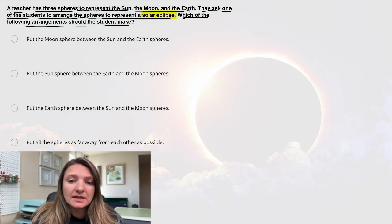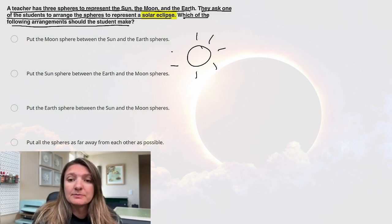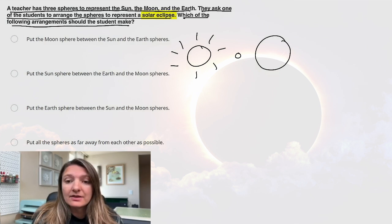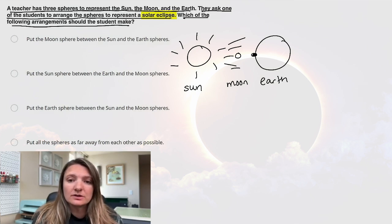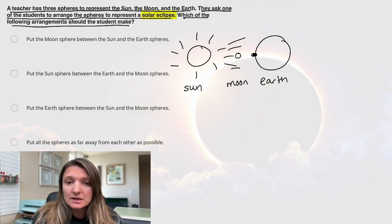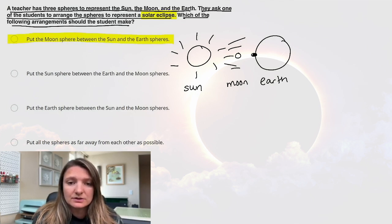Our key words here are that it's a solar eclipse. Let me draw the arrangement that should actually represent what we're looking at. Here we have the sun, and then we have the moon, which is tinier, and then we have the earth. The sun is shining light, and where that moon is creating a shadow on the earth, that will be where you see a solar eclipse. So our answer is going to be to put the moon sphere between the sun and the earth spheres. So, A.